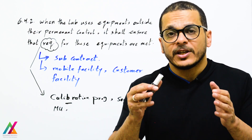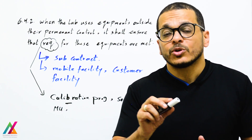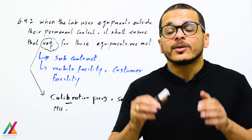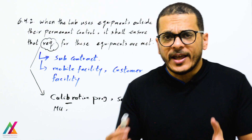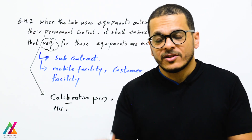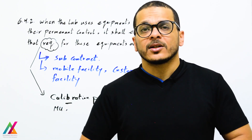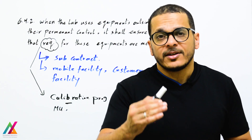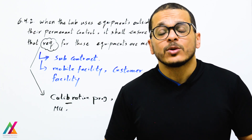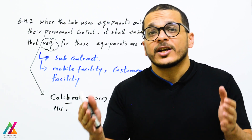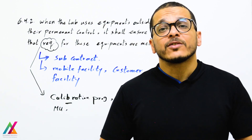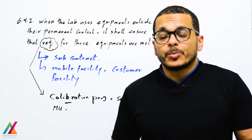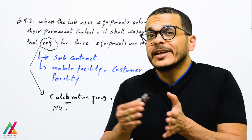The lab shall ensure that equipment not under their permanent control performs well — including checking calibration programs, sensitivity (lowest and highest concentration required for target analytes), and measurement uncertainty. For calibration, acceptance criteria such as a slope ≥ 0.995 and a verification standard within ±10% shall be confirmed. Based on this, the lab shall ensure all requirements are met for all equipment under its responsibility, whether under permanent control or not.